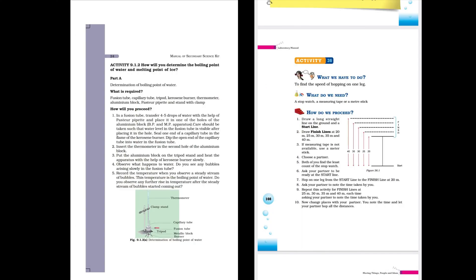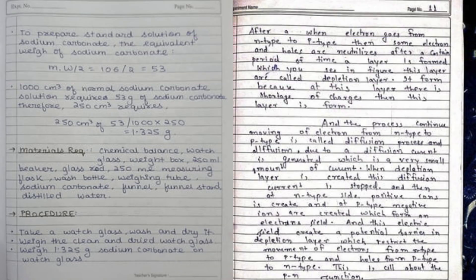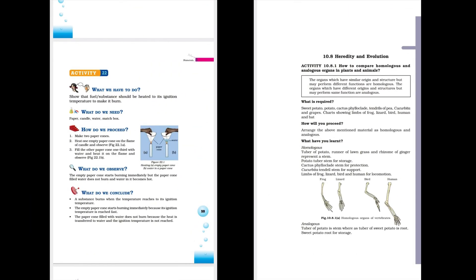Observations: provide tables or blank spaces where students can note down their observations. These may include physical changes, measured values, or other results depending on the nature of the experiment.